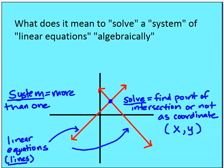When we say solve a system of linear equations algebraically, 'solve' means to find a point or no points of intersection as a coordinate. Linear equations are equations of lines, and a system means more than one. So we're going to find a point of intersection or not of equations of lines — at least two of those lines — and we're going to do that algebraically.